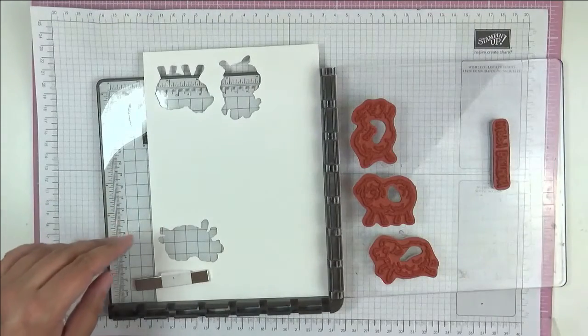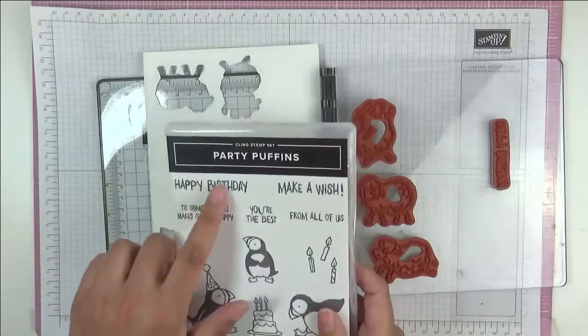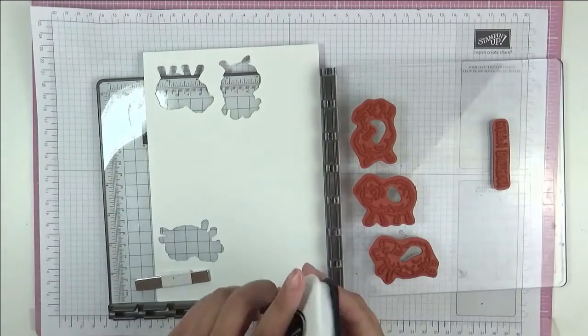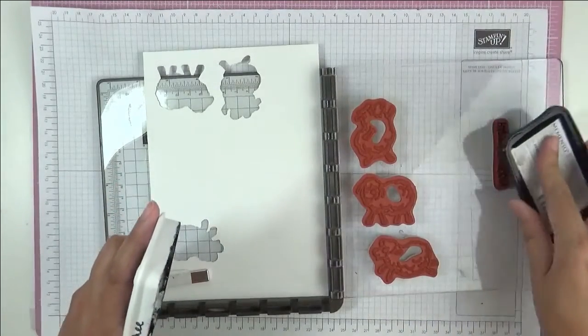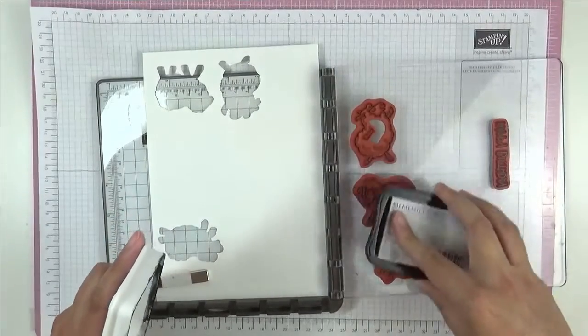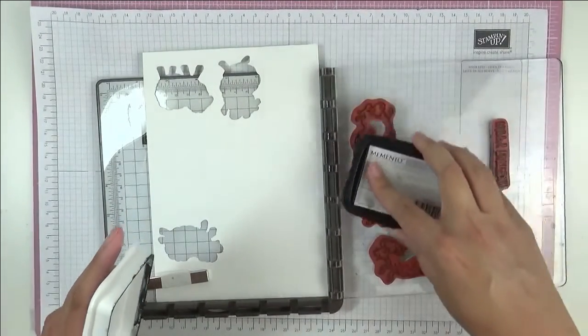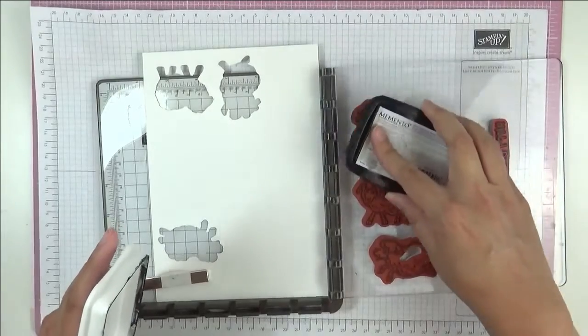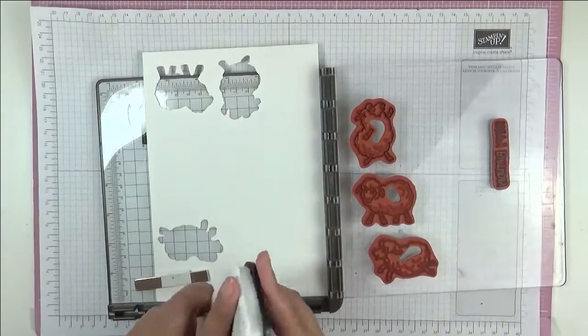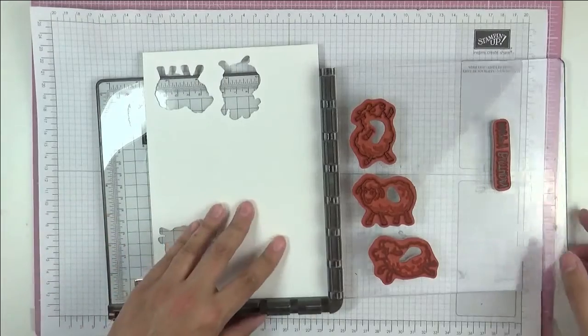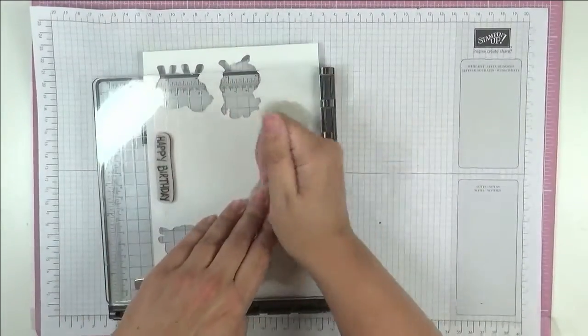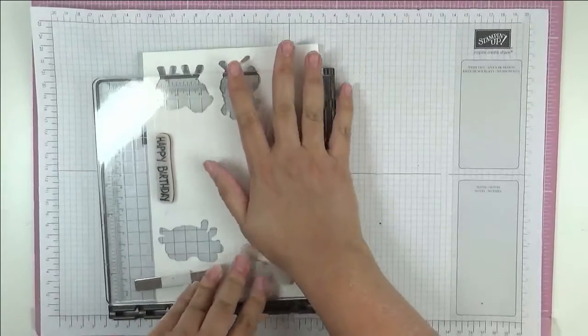The birthday is going to come from this Party Puffins Happy Birthday. I've got everything set up on my Stamparatus so we can just stamp in one go. And I'm going to stamp everything in Memento. Let's give everything a really good ink up so we don't miss any bits.